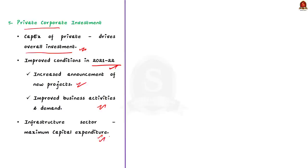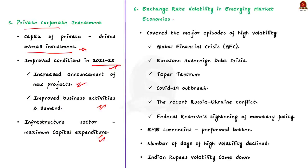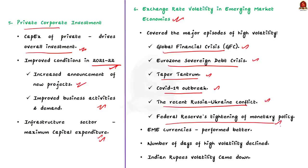Finally, the bulletin article analyzes exchange rate volatility in select emerging market economies with respect to US dollar since 2007. It covered major episodes of high volatility such as global financial crisis, Eurozone sovereign debt crisis, taper tantrum, COVID-19 outbreak, the recent Russia-Ukraine conflict, and the Federal Reserve's tightening of monetary policy. It is found that even in this high volatility episodes, the emerging market economic currencies have performed better. Also, the number of days of high volatility during each of the subsequent episodes have declined. Indian rupee volatility have also come down during the period 2007 to 2021.